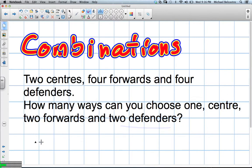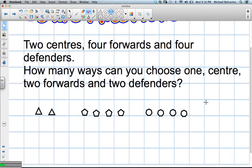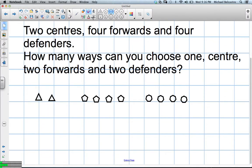So these guys will be our centers. The triangles will represent our centers. Pentagons are going to represent our four forwards. And seven-sided ones are going to represent - I can't remember the name - they'll represent our defenders. Centers, forwards, and defenders, right?